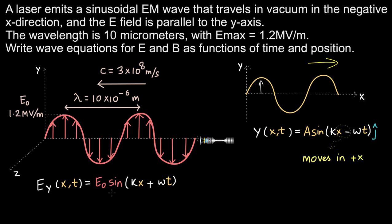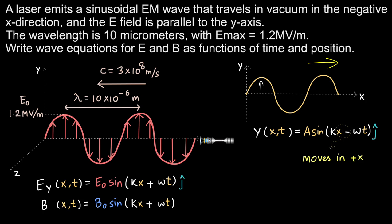The wave equation for the electric field has E₀ as the amplitude with a j cap indicating oscillation in the y direction. We don't yet know the direction of the magnetic field oscillation, but we know it will be perpendicular to the electric field and will move with the wave in the negative x direction. The magnetic field wave equation is incomplete until we determine the direction of B field oscillation.